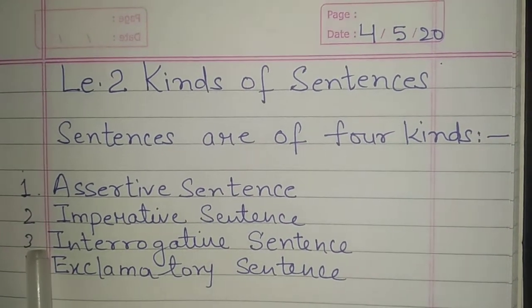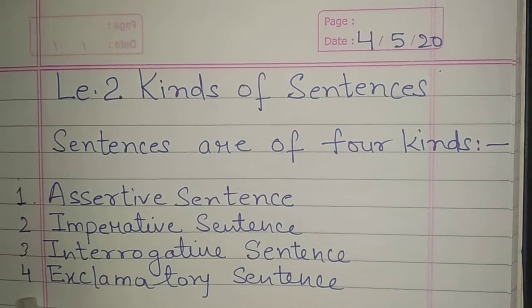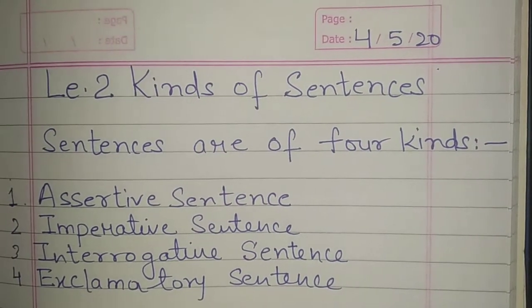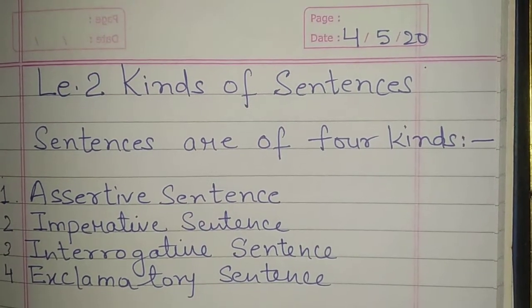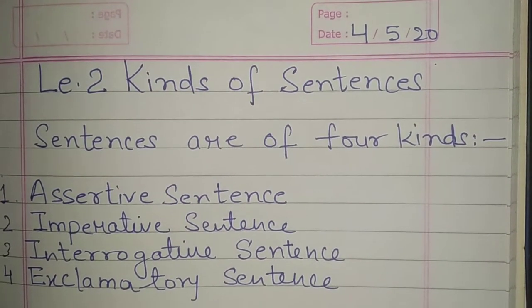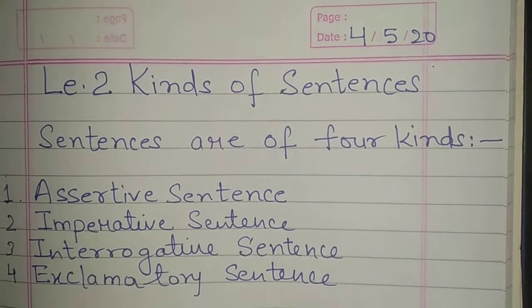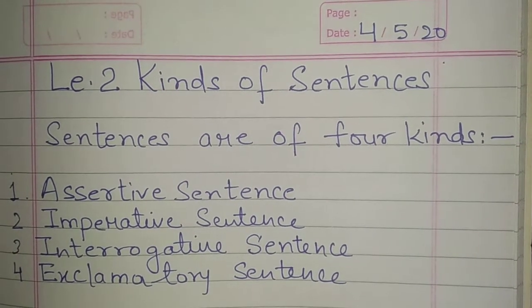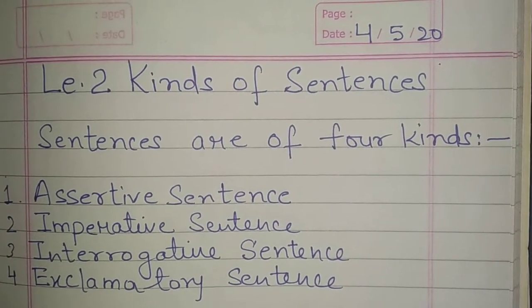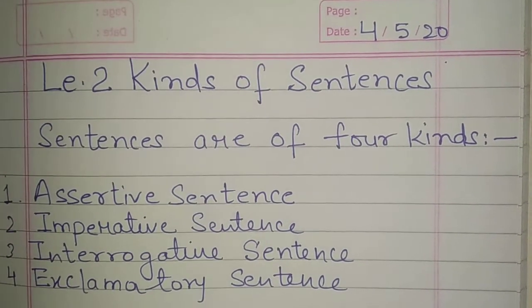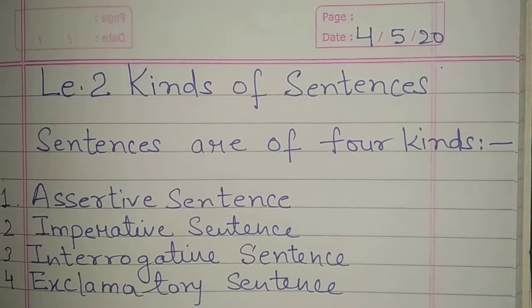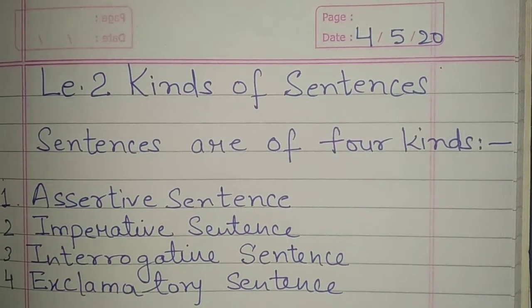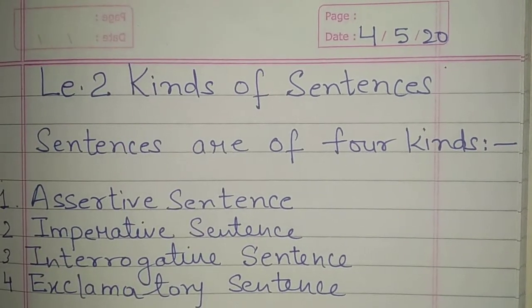In this time you will write the definition of kinds of sentences in your fair copy, and show that copy to me tomorrow between 8:30 to 9 am, after watching my next video which I will send you tomorrow. First see the video, then show your copy of today's work tomorrow between 8:30 to 9 am.